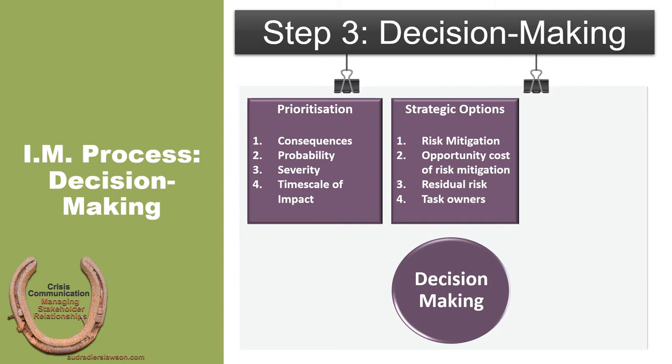Building on previous research and anticipatory risk management, the decision-making process in issues management has four components. First, organizations must identify and choose among different risk mitigation options. Second, organizations must identify the opportunity costs associated with risk mitigation — that's to say, if the organization allocates resources to mitigate an issue, are there other unintended consequences, either positive or negative, that might emerge because of risk mitigation?